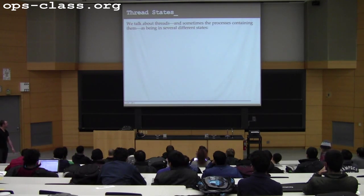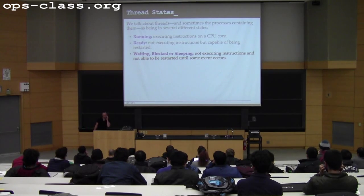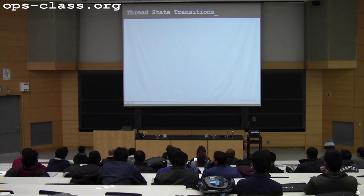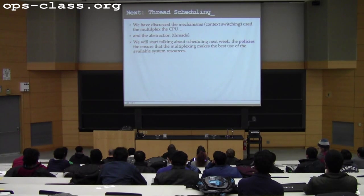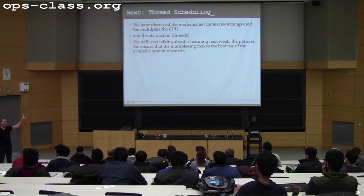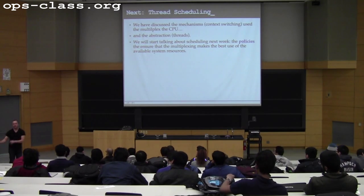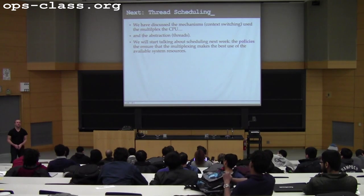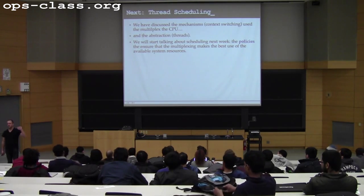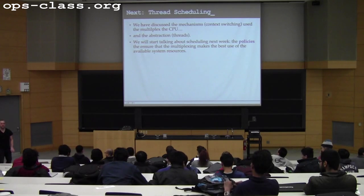Thread states — I'll leave this online; you can look through it, it's pretty intuitive. We'll start with it on Monday. What we're going to do next week is start talking about scheduling. We've built the mechanisms — I have full control over the CPU, I can start and stop threads whenever I want, and I have this nice abstraction for programs. Now we need policies that effectively make use of system resources. That's the topic of thread scheduling and CPU scheduling. Good luck with your design documents; I'll see you on Monday.